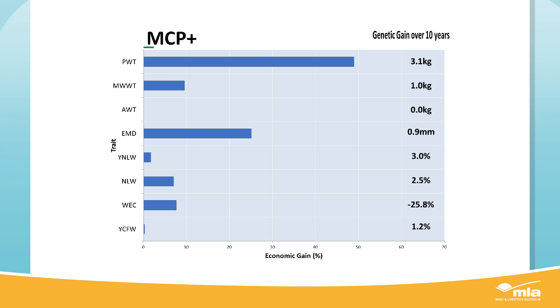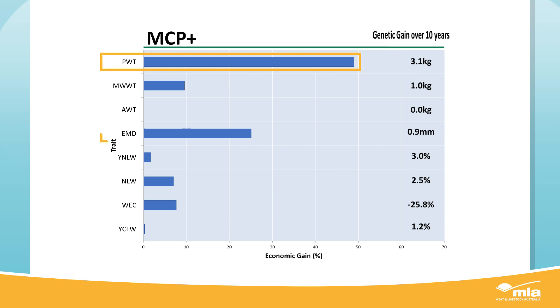The longer the bar, the greater the economic contribution to the production system. In this example, post-weaning weight and eye muscle depth demonstrate this.